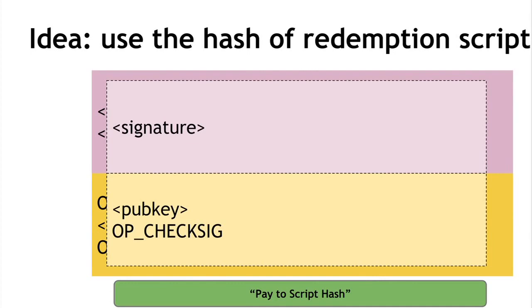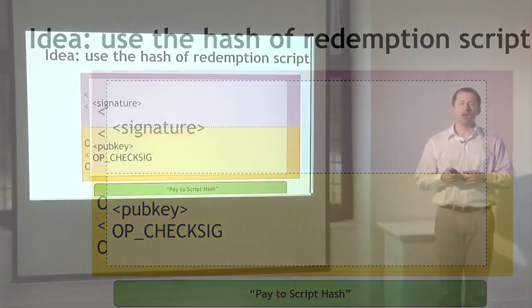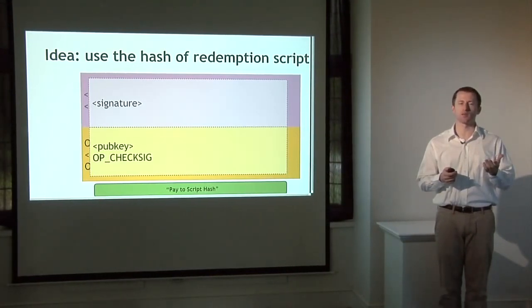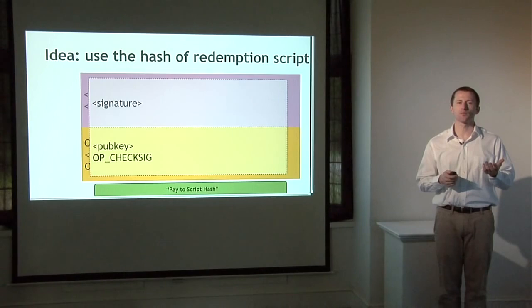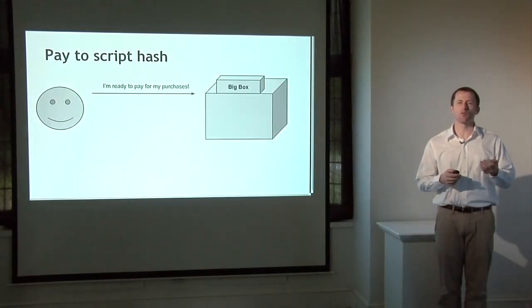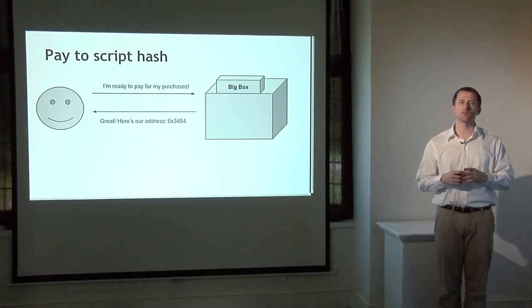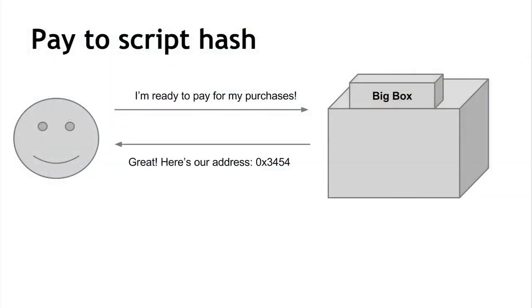This is called pay-to-script-hash (P2SH) — an alternative to the normal pay-to-public-key. It was added to Bitcoin after the fact, not part of the initial design, and is probably the most notable feature added since the original specification. It removes complexity from the sender, who just specifies a hash, and has an efficiency gain: miners must track the set of unredeemed output scripts, and with P2SH those outputs are as small as possible since they just contain a hash — all complexity is pushed to the input scripts.